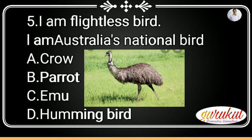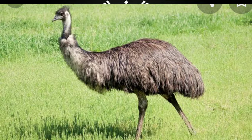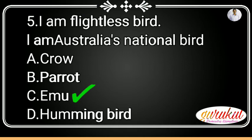Next question: I am a flightless bird. I am Australia's national bird. Option A: crow, B: parrot, C: emu, D: hummingbird. So, emu is Australia's national bird. This will be option C — option C is the right choice.